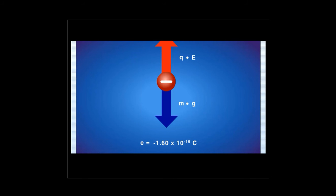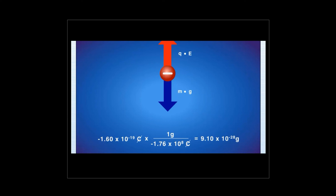From the charge of an electron and the charge to mass ratio of an electron determined by Thomson using a cathode ray tube, Millikan was able to calculate the mass of an electron. The mass of an electron, 9.10 times 10 to the negative 28 grams, is an exceedingly small mass.